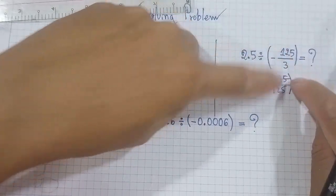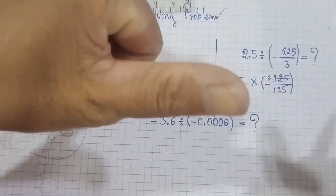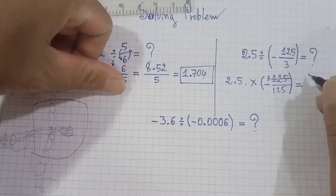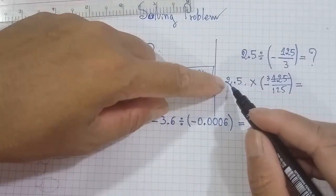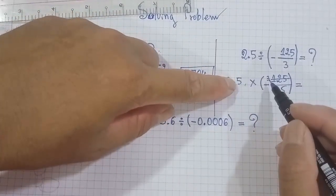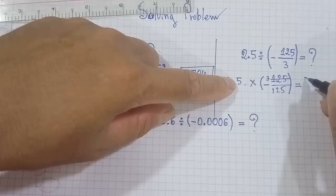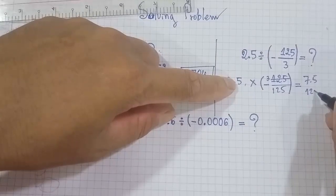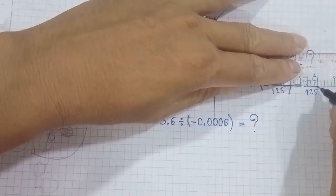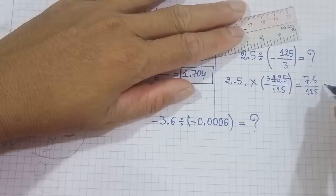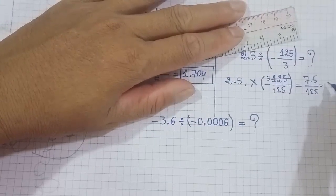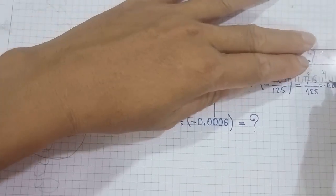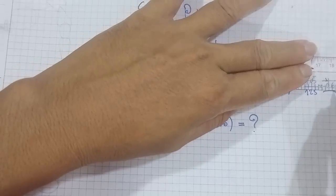When we change the sign, 3 up and 125 down, right. So now continue. When you calculate, 2.5 multiply with 3 equals 7.5 divided by 125. Yes, and the final is 0.06. This is the final answer.